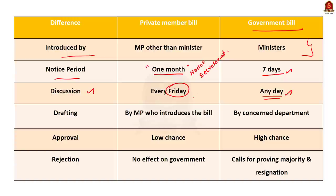The fourth difference is with respect to the drafting of the bill. The private member's bill is drafted by the MP himself who wants to introduce it. But when it comes to the government bill, it is drafted by the concerned department in the concerned ministry.